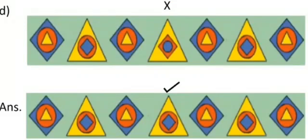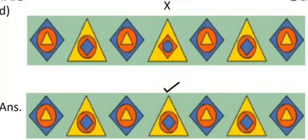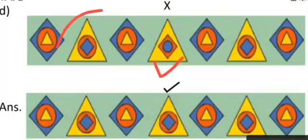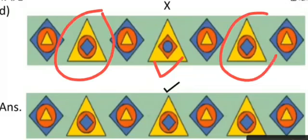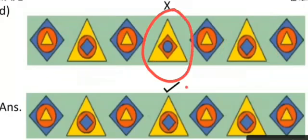In this pattern, which one is wrong? The fourth one. Let us observe: the diamond is on the outer side of the circle in one shape, while in the other shapes the diamond is inside the circle. So this fourth one is wrong, and the corrected answer is here.